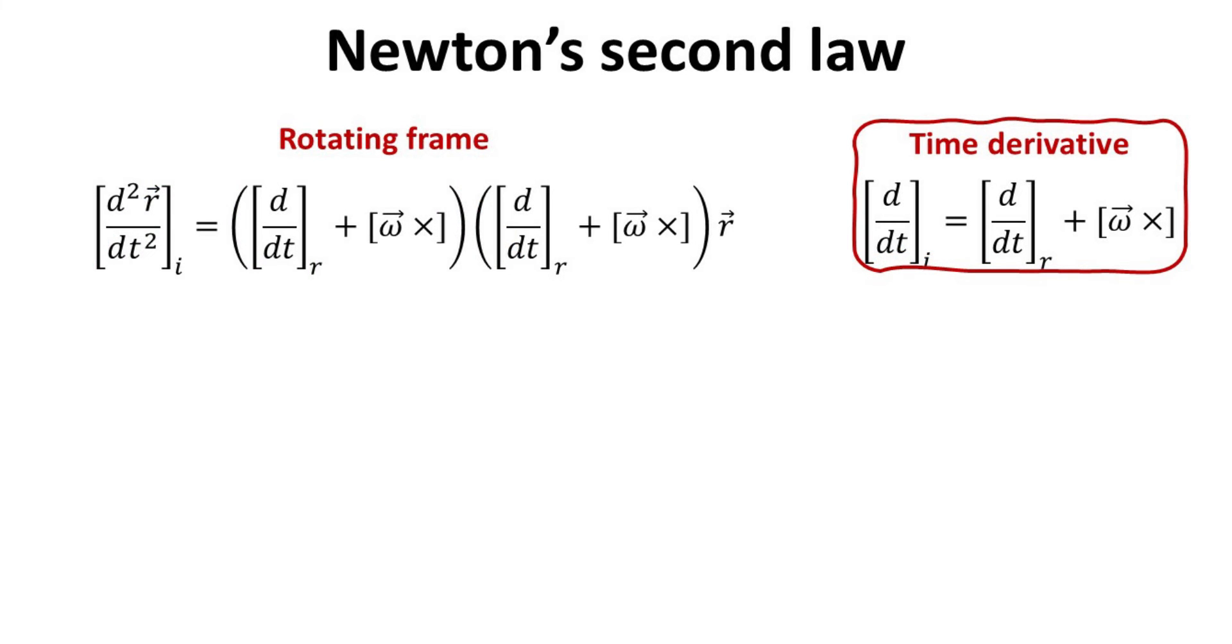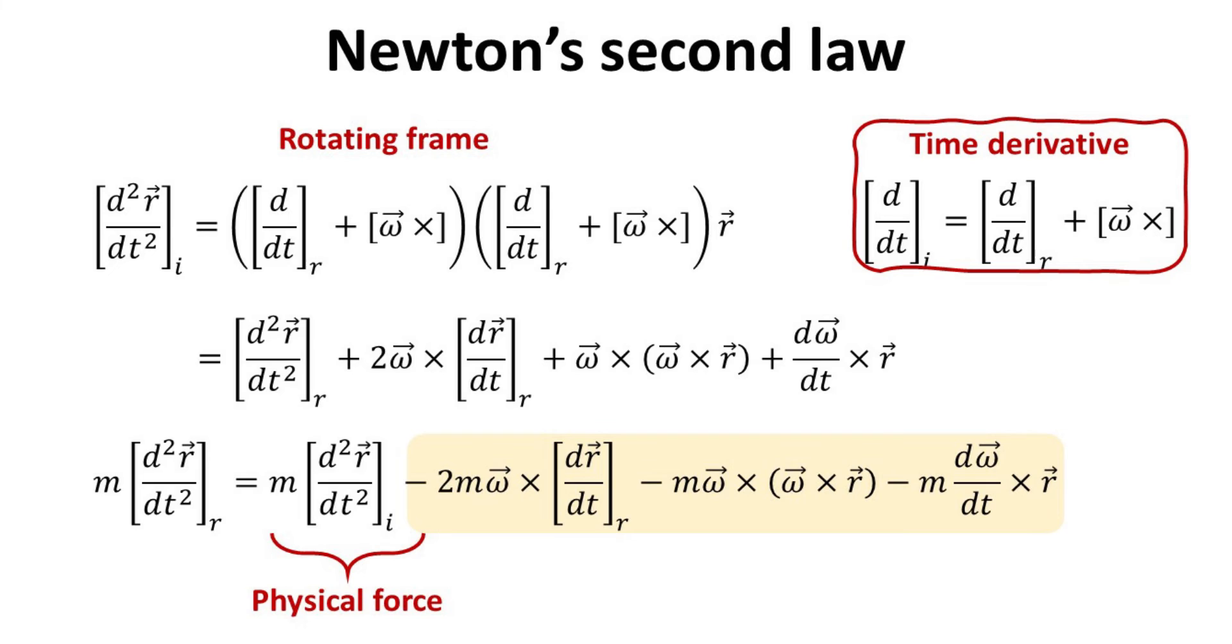If one derives the acceleration in this rotating frame, which is just the second time derivative of the position vector r, one can show the appearance of three new terms in addition to the actual physical force. In other words, Newton's second law in the rotating frame is not simply just force equals mass times acceleration. These new forces are also known as apparent forces, since they arise only in the non-inertial rotating frame. An observer in the rotating frame would thus experience these forces, here known as the Coriolis, centrifugal, and Euler forces.